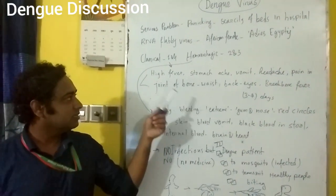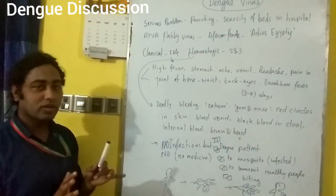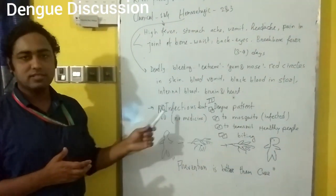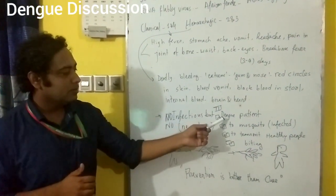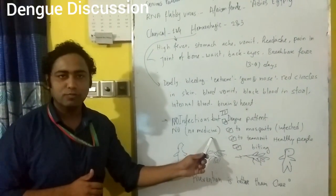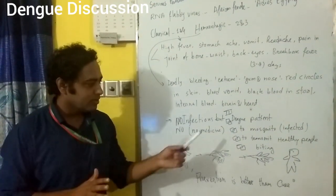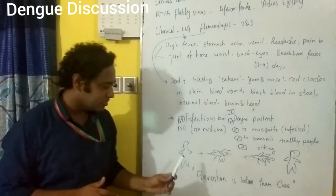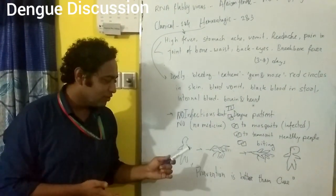Internal bleeding both in the brain and heart is the serious problem, and people will die. Now, dengue is not an infectious virus — it cannot be transmitted from human to human. And the problem is it does not have any medicine so far: no injection, nothing, no cure has been discovered or invented so far. So dengue fever cannot spread from human being to human being directly.